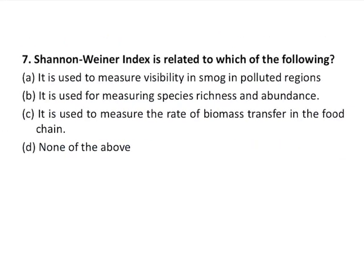Question number seven is again a fact-based question. The question asks what the Shannon-Wiener index is related to: measuring the visibility of smoke, measuring species richness and abundance, or measuring the rate of biomass transfer in the food chain. The correct answer is option B — it is used for measuring species richness and abundance. India is one of 17 mega diverse countries, and this is evident in the Shannon-Wiener index, which also compares the diversity of species among various habitats.